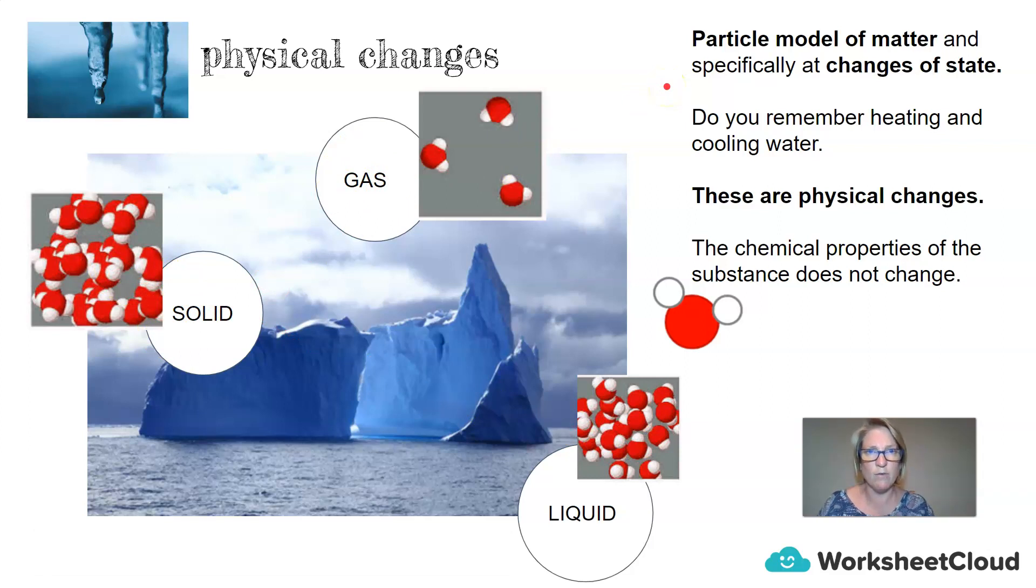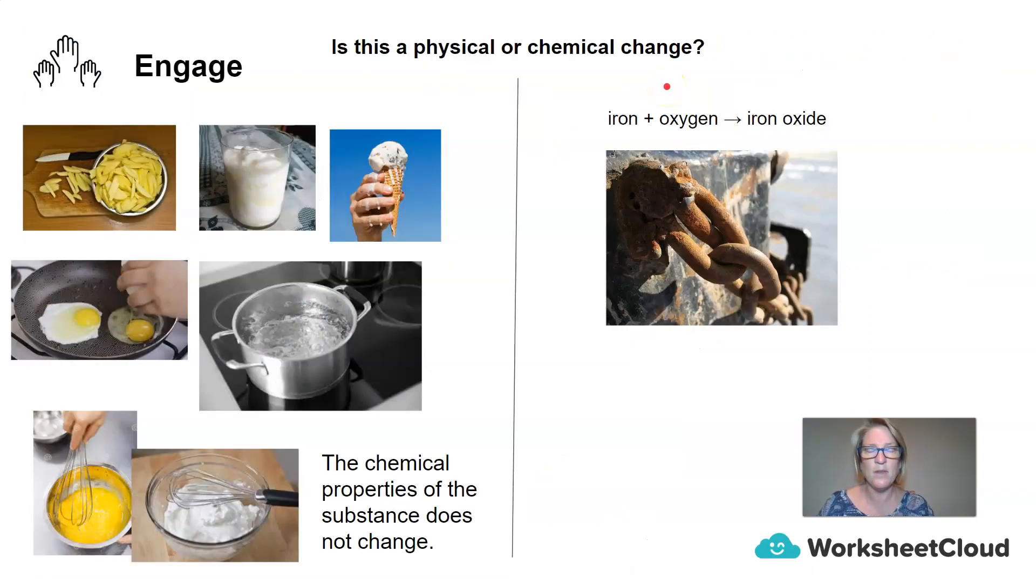So where are we going with this lesson? So one way that we could group the above pictures is to say whether or not we saw a physical change happening in the picture or whether or not we saw a chemical change. So when we take a potato and we cut it into smaller cubes and smaller pieces, we are physically changing the shape. It is still a potato. There is no change in the chemicals.